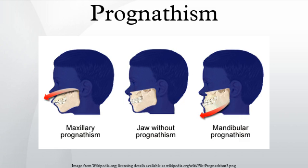When there is maxillary and/or alveolar prognathism which causes an alignment of the maxillary incisors significantly anterior to the lower teeth, the condition is called an overjet. When the reverse is the case and the lower jaw extends forward beyond the upper, the condition is referred to as retrognathia.